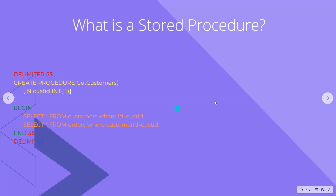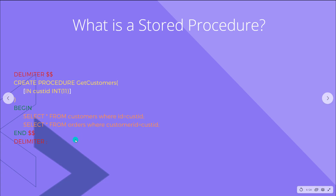Let's look at one so you can see what it is. I have one here and it's color-coded to show different parts of the procedure. Everything in red is the outer part and we actually don't need to worry about this when building stored procedures in ScriptCase, but if you built one straight into your database you would need it.